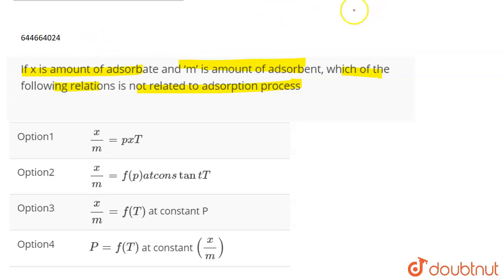If X is the amount of adsorbate and M is the mass of adsorbent, then X/M represents the extent of adsorption or the degree of adsorption. Adsorption is a surface phenomenon in which the molecules are adsorbed on the surface rather than the bulk.